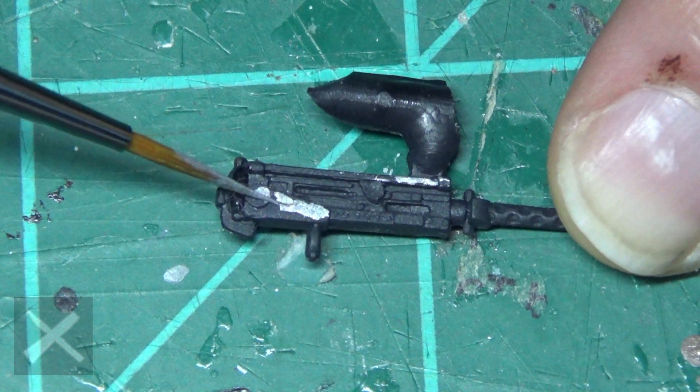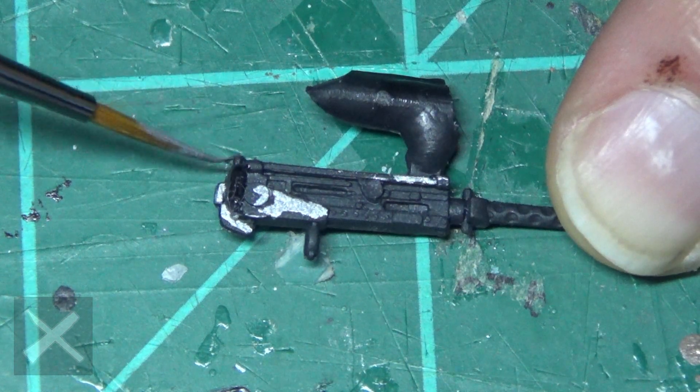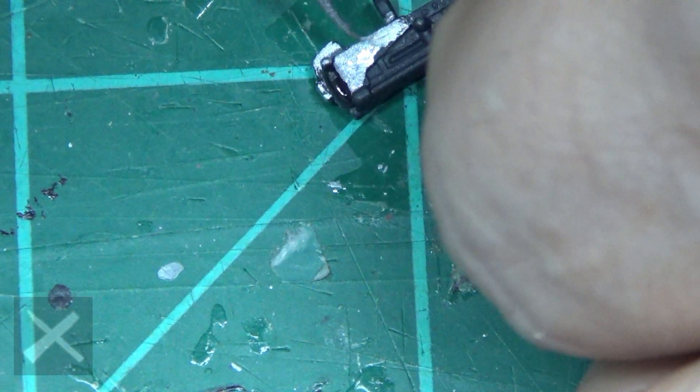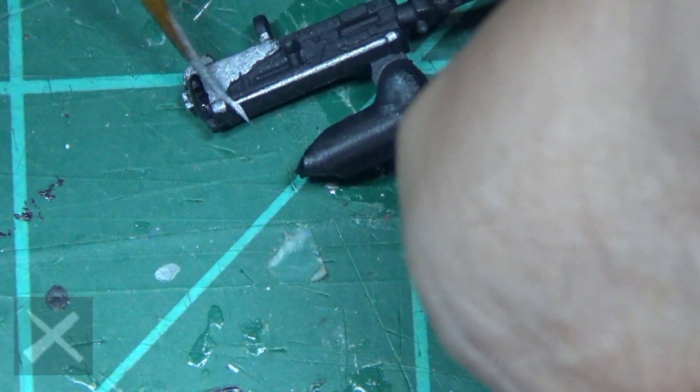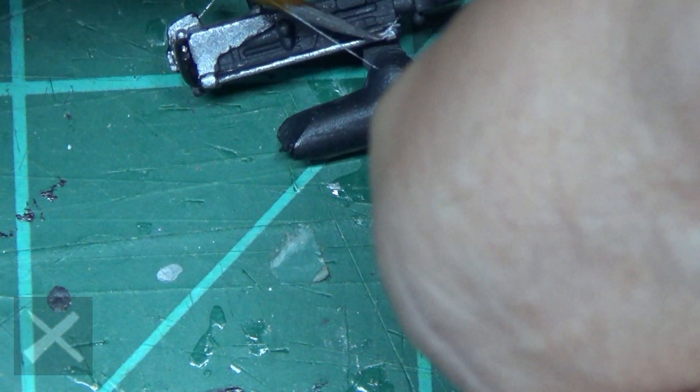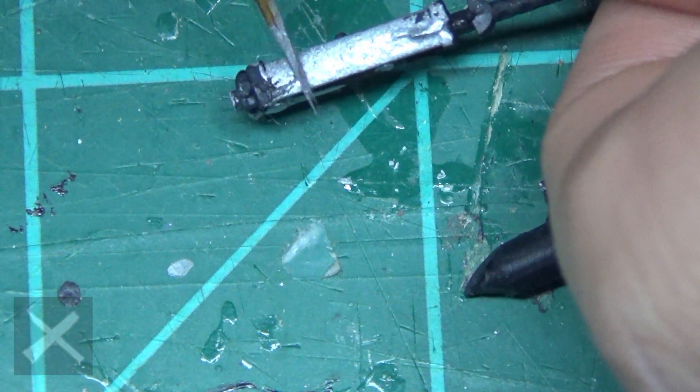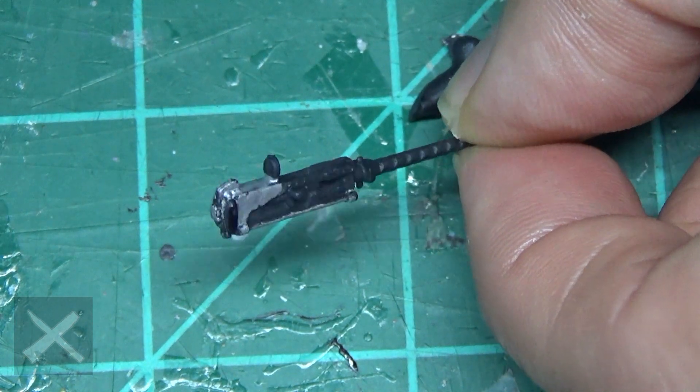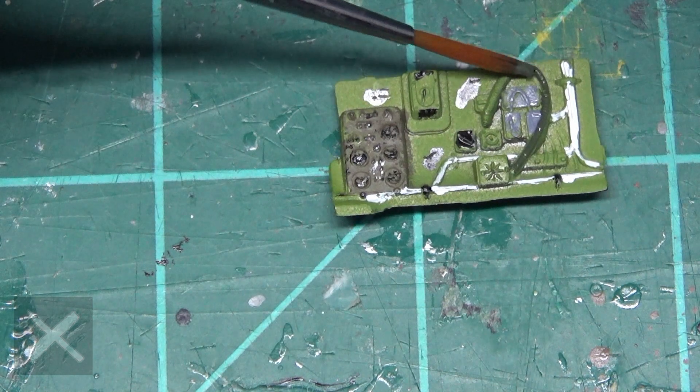So we got our guns, cannons, whatever you want to call these big things. Paint the handles, the grips, the mounts, all that good stuff. They got to mount them somehow and this is how they did it. So just carefully go around. Remember not going to see a lot of these because they are inside small tiny windows. You're going to have to take a flashlight to look inside unless you do the half version.